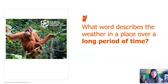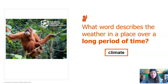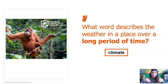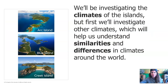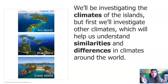What word describes the weather in a place over a long period of time? It's climate. The climate describes the pattern that happens year after year as the seasons change in a place. Weather describes what's happening in a place just on one day. So weather is very short-term and climate is very long-term. We'll be investigating the climates of these islands, but first we'll investigate other climates, which will help us understand similarities and differences in climates around the world.